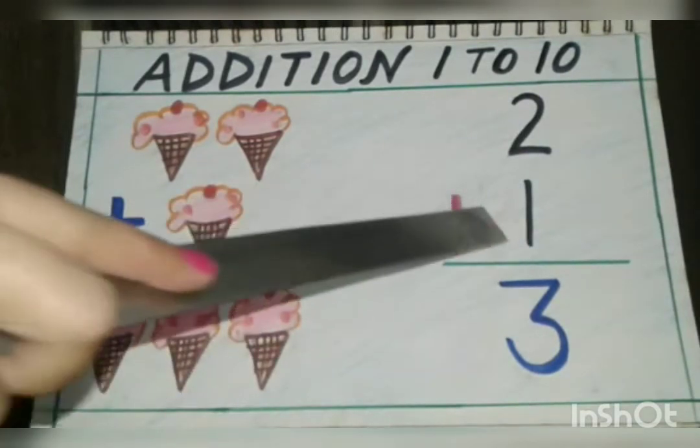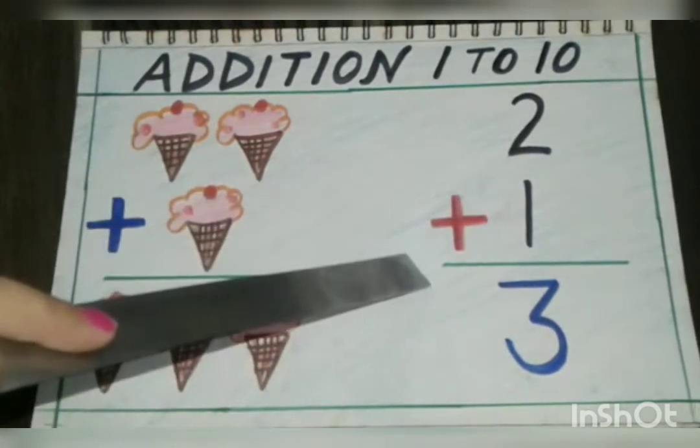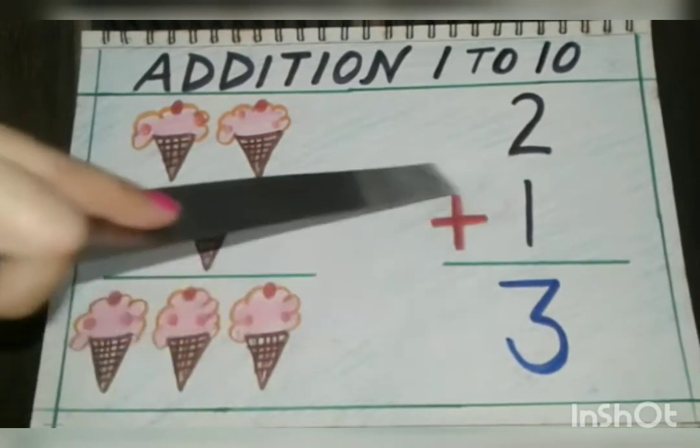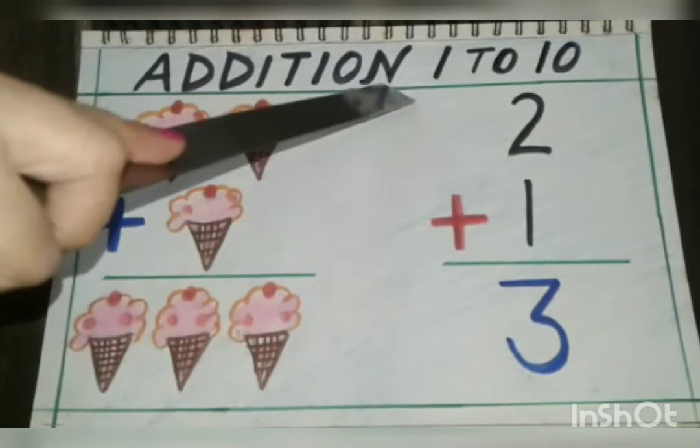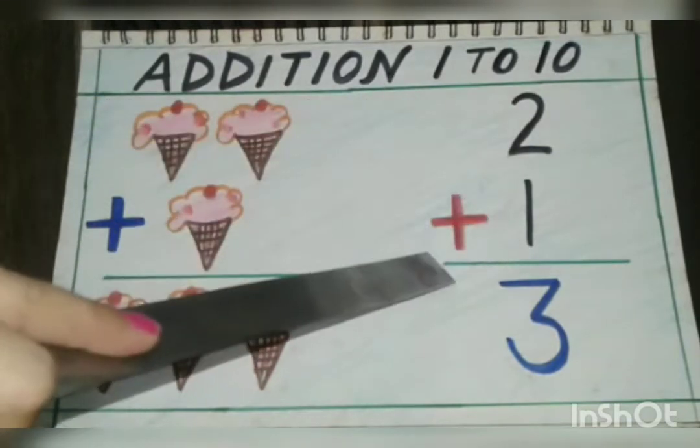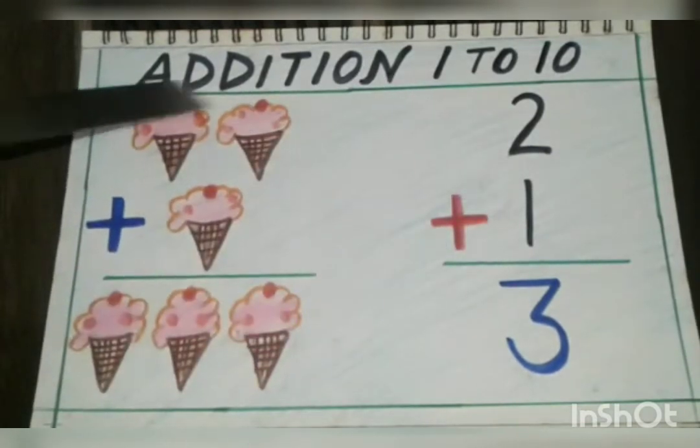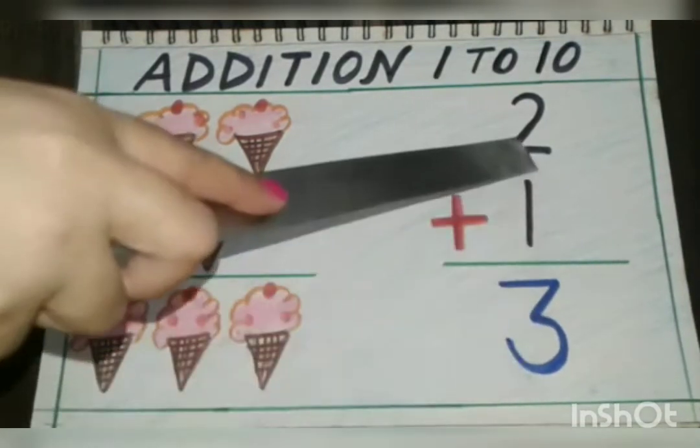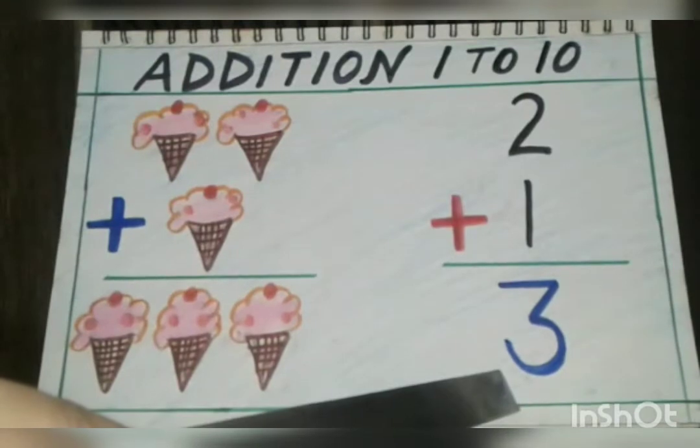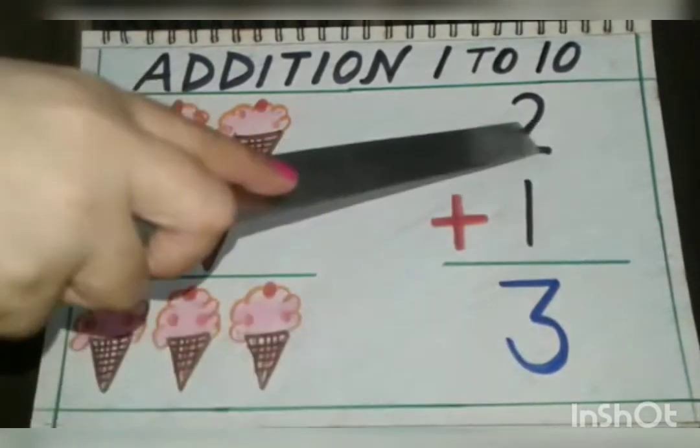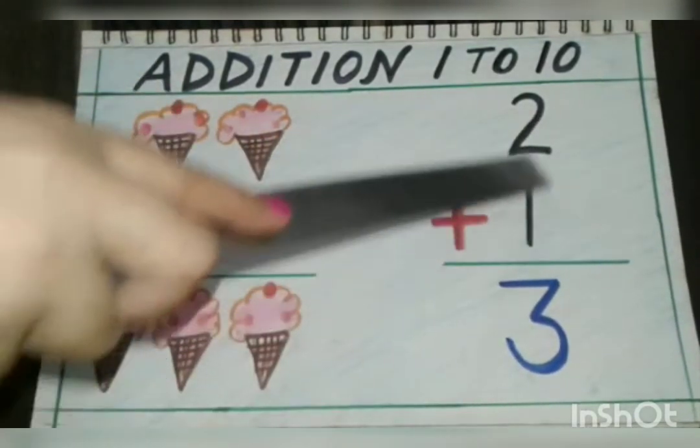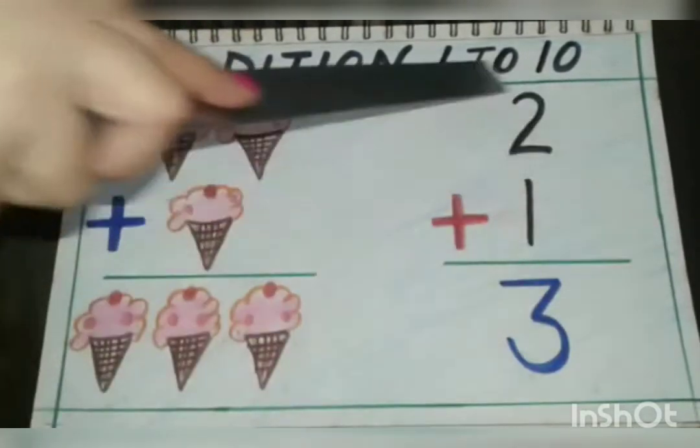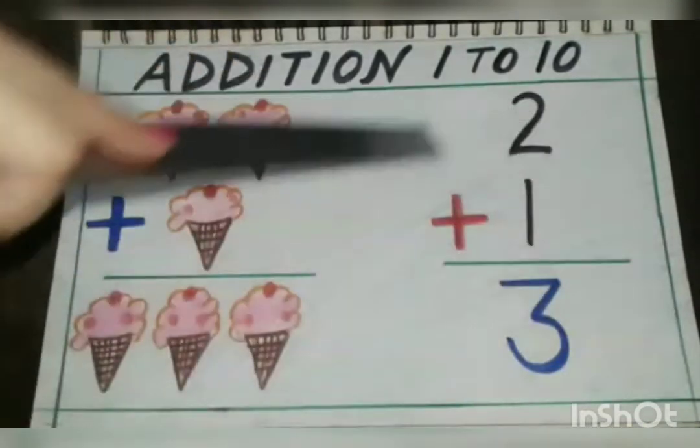So let's see how many total ice creams I have. This is the plus sign and you all know that this is the symbol of addition. Plus is the symbol of addition. So two plus one is equal to three. When we write the numbers like this, one number below the other number, this type of addition is called vertical addition.